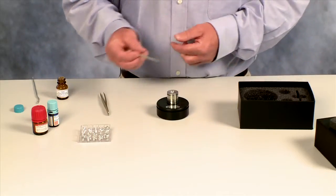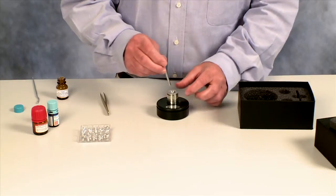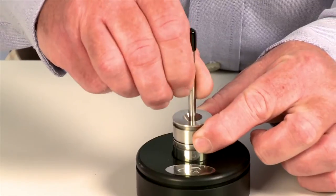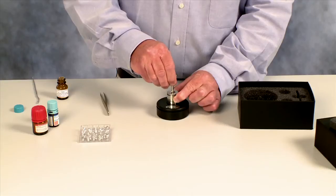Now you take this rod here, it's got a grip on the end just to make it easy to hold, put it in like this and just give it a twirl around. And what you're doing now is you're packing the sample down.